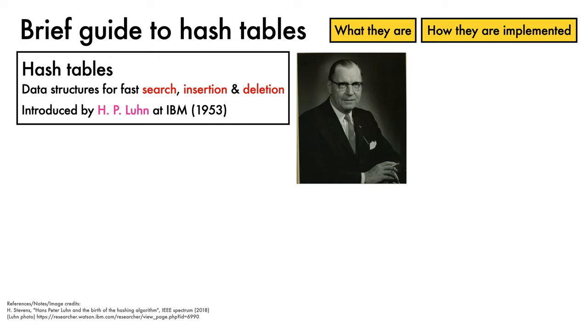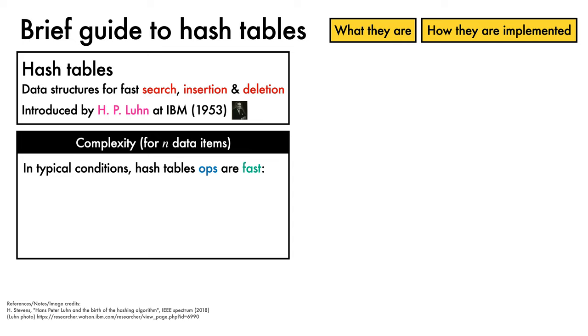What makes hash tables one of the wonders of the modern world is that in typical conditions their operations are lightning fast. In particular, the average case complexity of searching, insertion, and deletion is constant.